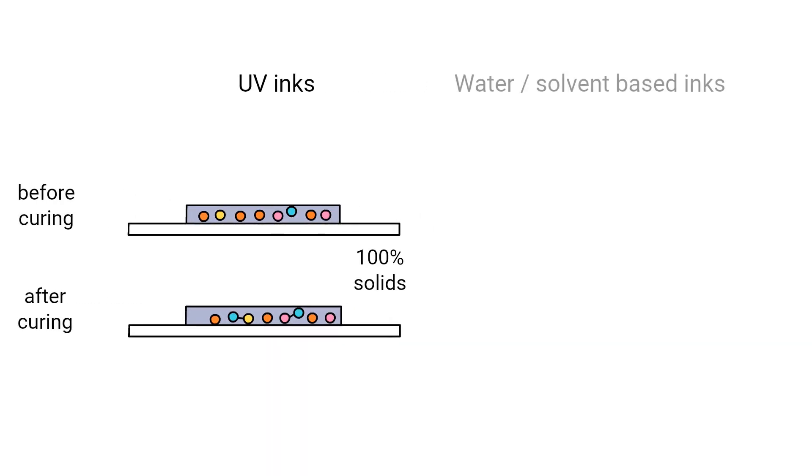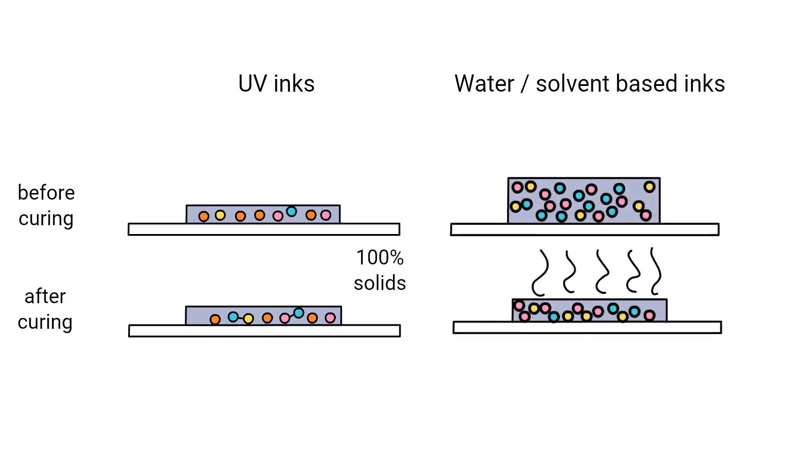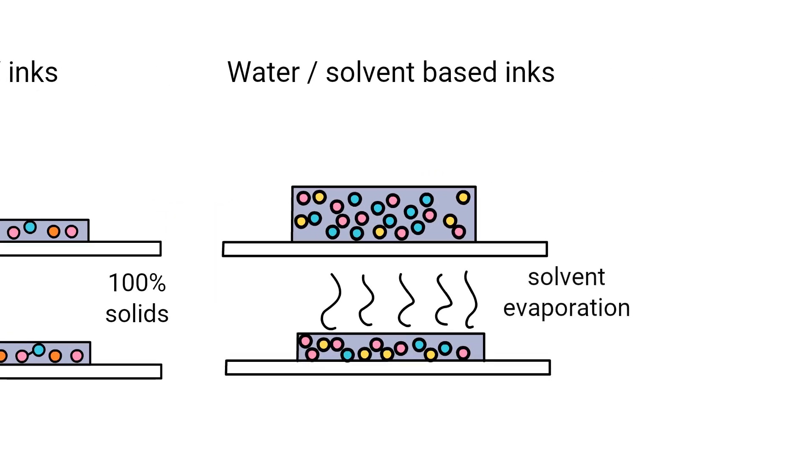As we mentioned, these UV inks and coatings are 100% solids. What you put down is what you get. OK, it shrinks a little bit. This means you can put less ink onto the substrate, compared to solvent-borne or water-based inks, which lose all that water and solvent during the drying process.